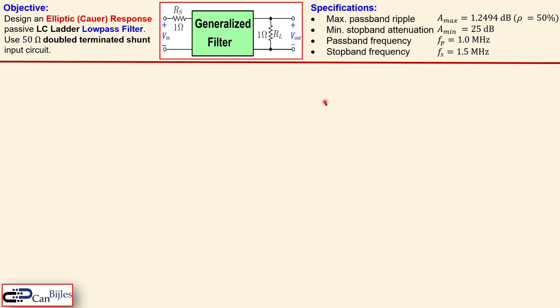The specifications are similar to those for the Butterworth and other response filters discussed in previous examples. The maximum passband ripple must be 1.2494 dB, which corresponds in the older literature to a reflection coefficient of 50%. The minimum stopband attenuation must be 25 dB. The passband frequency is 1 MHz and the stopband frequency is 1.5 MHz. You can repeat this complete process for Chebyshev, Butterworth, or Bessel responses using the right coefficients.